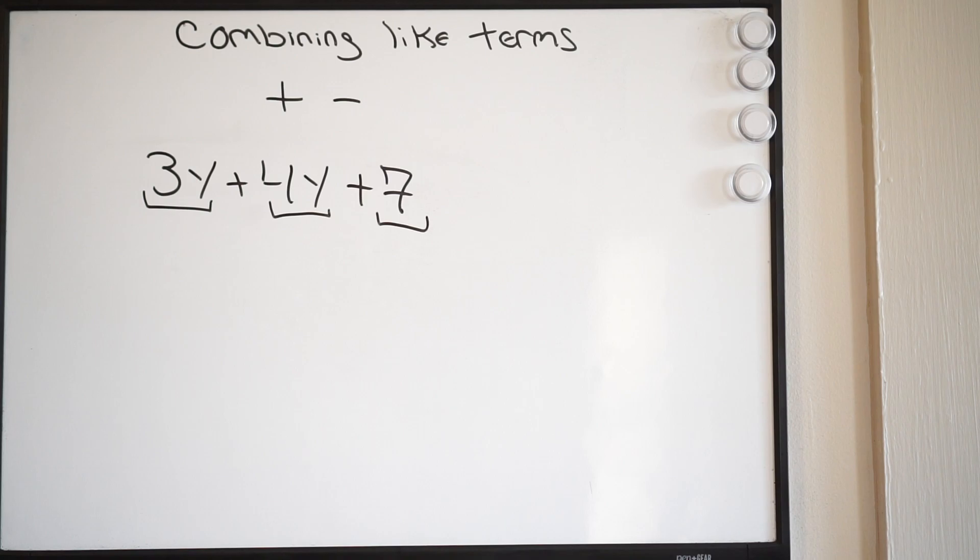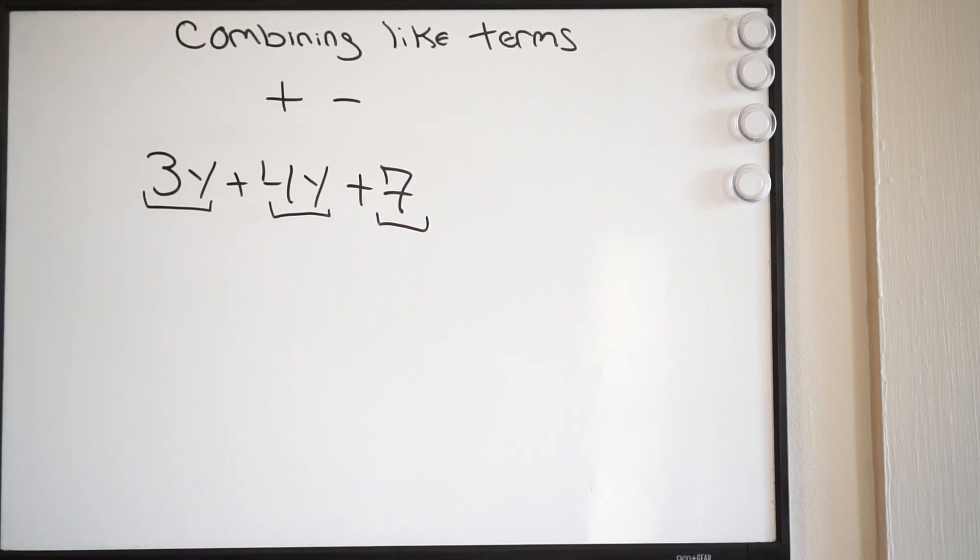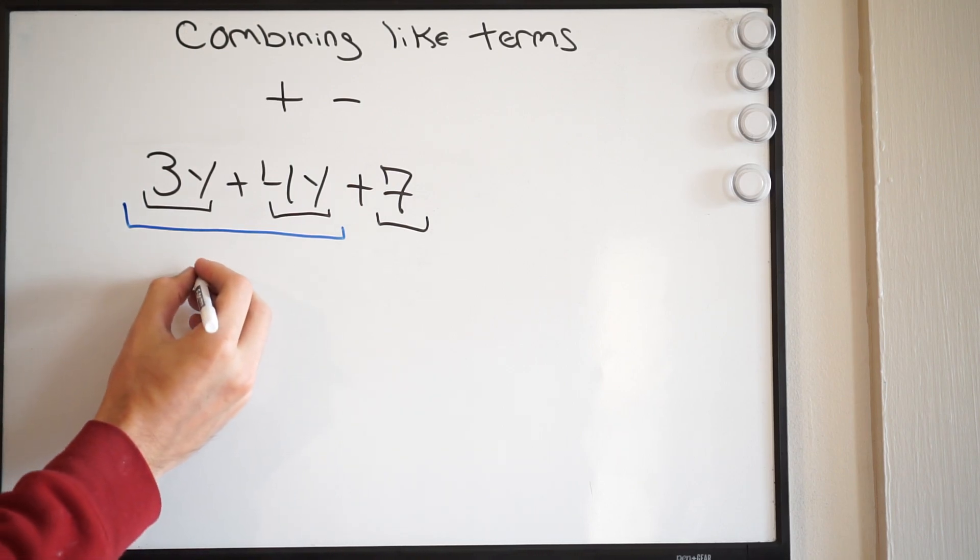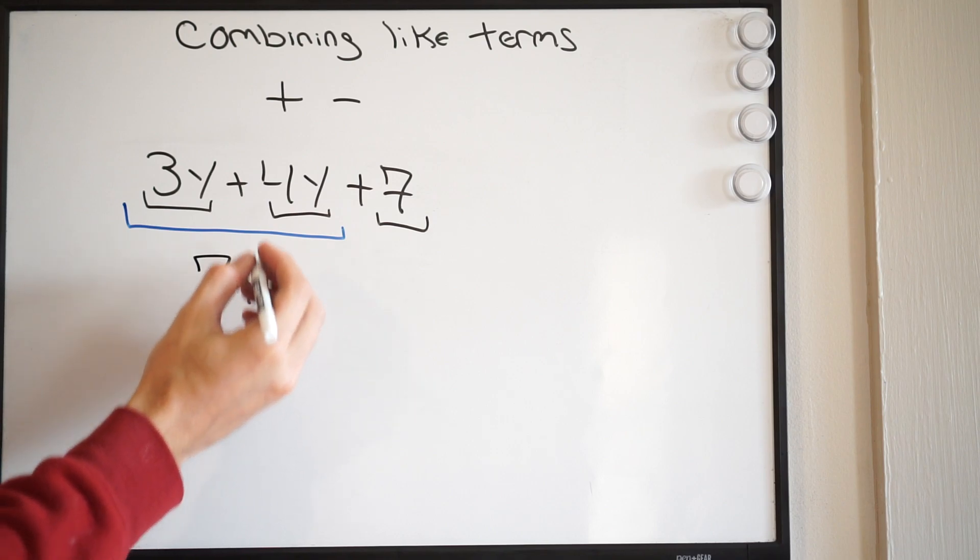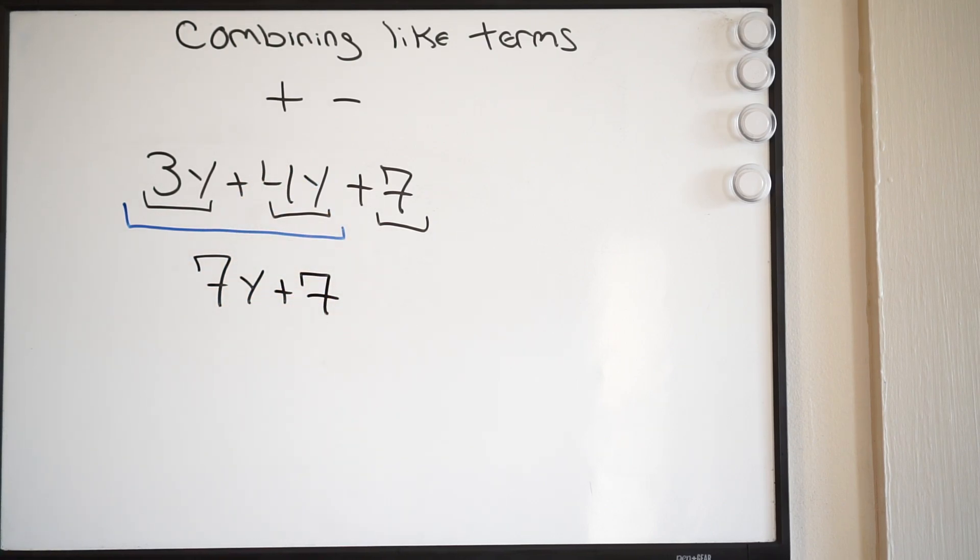Now which ones are going to be like terms? Well, notice here, I have a y and a y. Here, I do not. This is just going to be called a coefficient. There's no variable on it. It's a constant. It's unchanging. These are going to be considered my like terms, so we can combine those, and when we do, we get 7y plus 7, and that there is going to be your final answer.